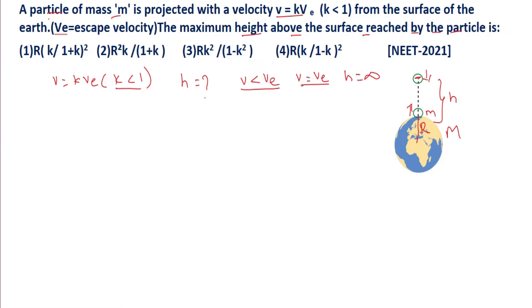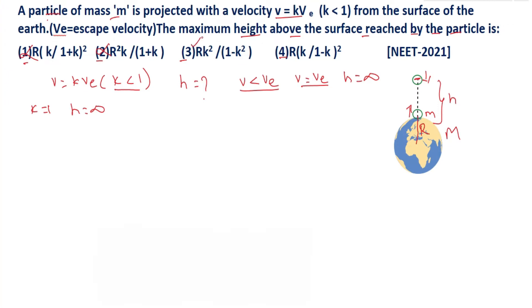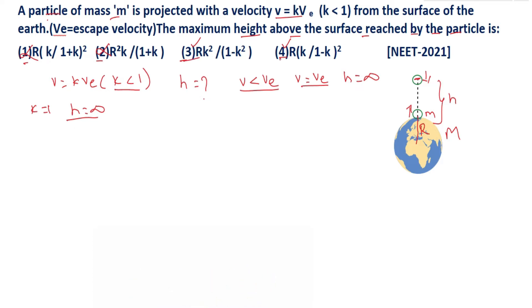Now let us see the case for k equal to 1. When k is equal to 1, we know that the value of H should be infinity. Let us substitute k equal to 1 in these options. When I substitute k equal to 1 in the first option, H will not be infinity, so the first option will not be your answer. Similarly, in the case of the second option also, H will not be infinity, so the second option will not be your answer. Whereas in the case of the third option and the fourth option, the value of H will be infinity. That means your answer will be either option 3 or option 4.